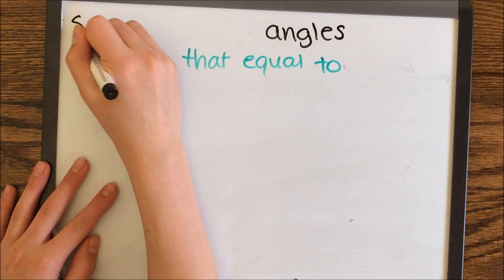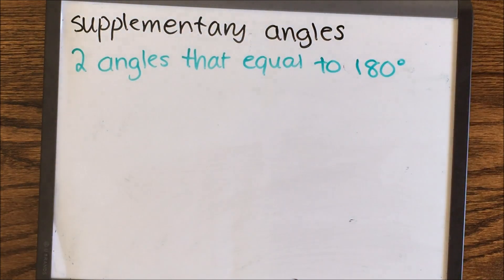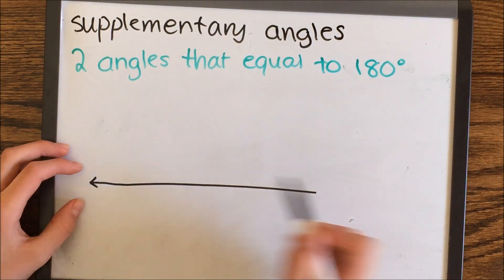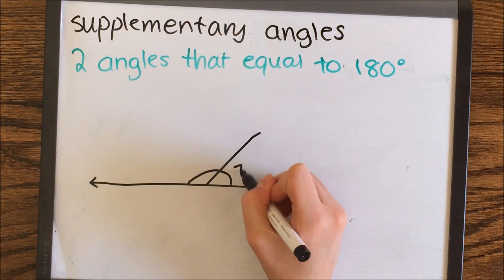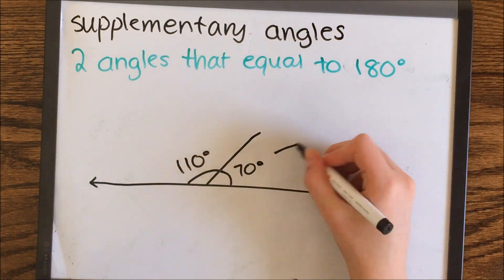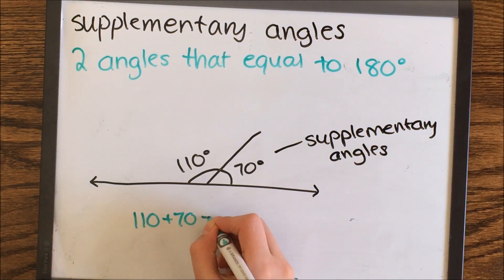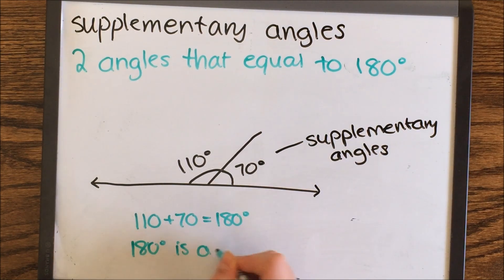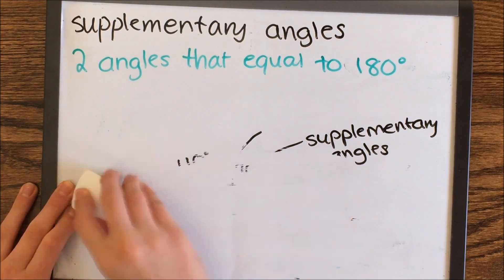Then there are supplementary angles, which are basically two angles that equal 180 degrees. Also, they don't have to be congruent. Here one angle is 110 degrees, the other is 70 degrees. 110 plus 70 is 180, so that's why they are supplementary.